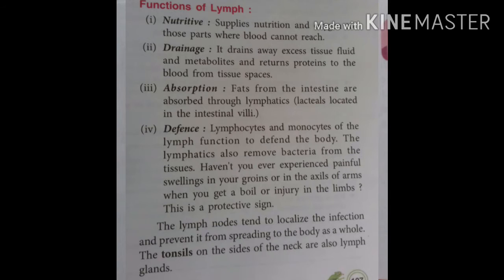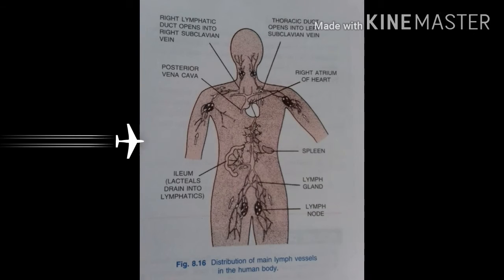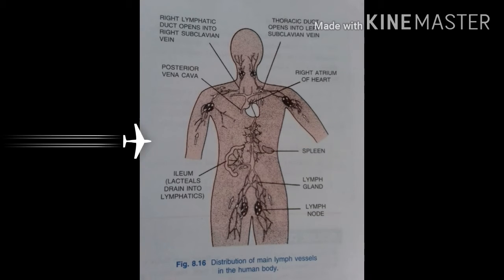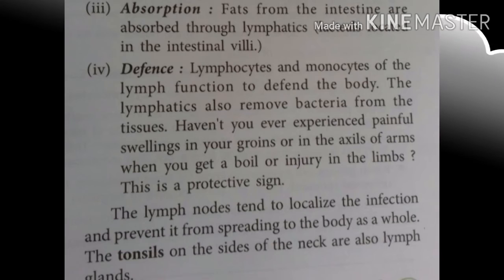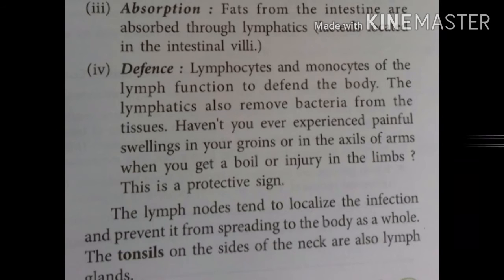The functions of lymph include nutritive, drainage, and absorption. Nutritive: lymph supplies nutrition and oxygen to parts where blood cannot reach. Drainage: it drains away excess tissue fluid and metabolites, and returns protein to the blood from tissue spaces. Absorption: fats from the intestine are absorbed through lymphatics called lacteals, which are located in the intestinal villi — finger-like structures found in the inner wall of the intestine that increase surface area for food absorption.